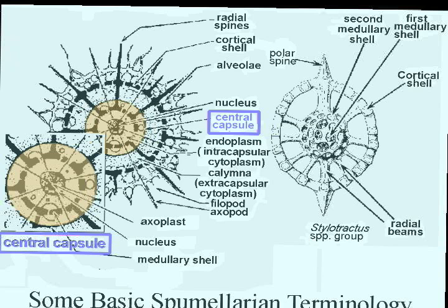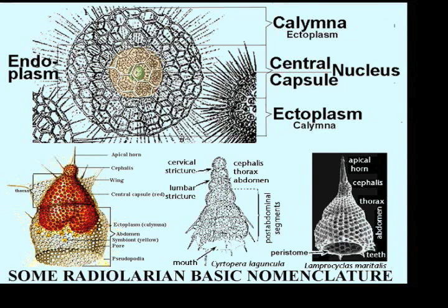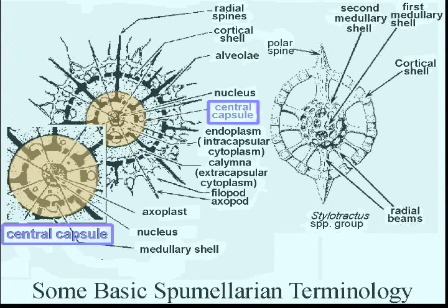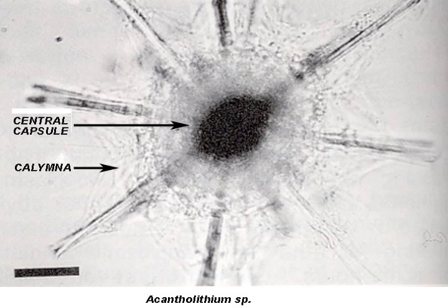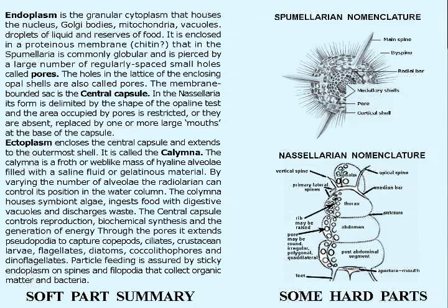The ectoplasm envelops the capsule. Called the kalymma, it is a froth- or web-like mass of hyaline alveoli filled with a saline fluid or gelatinous material. The kalymma contains digestive vacuoles, eliminates waste, houses protective dinoflagellates, and in many light-seeking species lodges photosynthetic algal symbionts that secrete organic nutrients to supplement the protist's supply of energy.